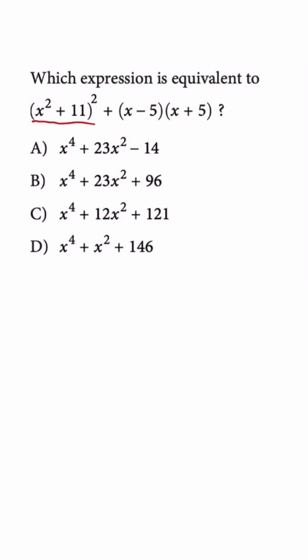So when we take our first expression and square it, we're just going to square the first term to get x to the fourth. We know the middle term is always a times b times 2. So that's 11 times x squared times 2, which gives us 22x squared.